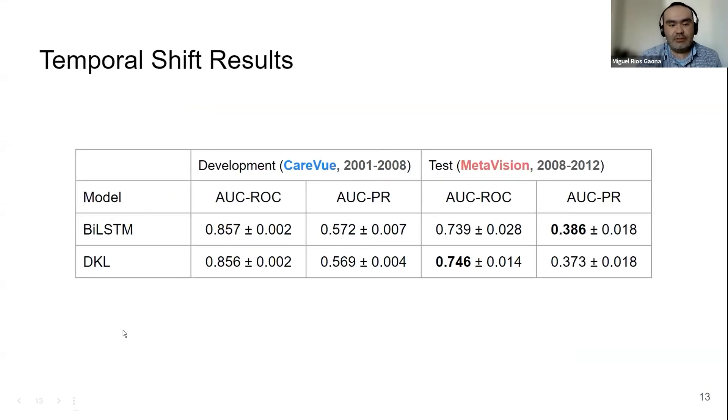Let's have a look at the results. We compare the baseline and the deep kernel learning. This part is related to the internal validation in the development dataset, CareVue. This part is related to the out of distribution, MetaVision, temporal shift.